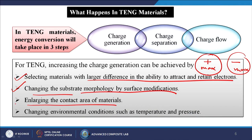The third method is enlarging the contact area of the materials — we can enlarge the contact surface between the two substrates. The fourth method is changing the environmental conditions such as temperature and pressure, because temperature plays a vital role in the triboelectric effect, as does pressure.